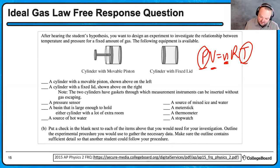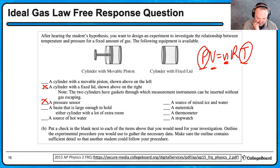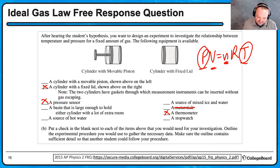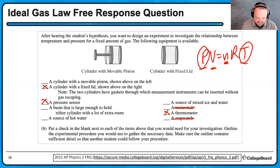Looking at the available equipment: a pressure sensor — definitely want that; a basin large enough to hold the cylinder; a source of hot water — that allows me to change the temperature; ice water — that could also change temperature; a meter stick — don't need that since I'm not measuring volume; a thermometer — definitely need that; a stopwatch — not strictly necessary. I'll go with hot water in a basin, let it cool down to room temperature to vary temperatures. The rule for experimental design questions: keep it basic. Do not make the experiment convoluted — the wackier the experiment, the less likely you are to properly explain it and earn all the points.